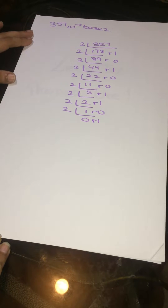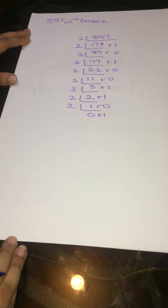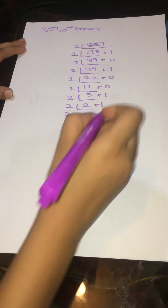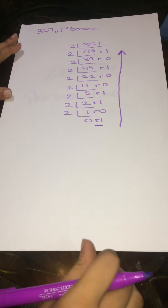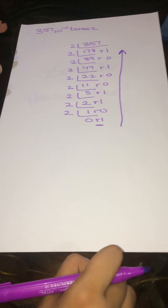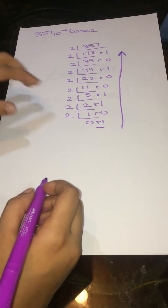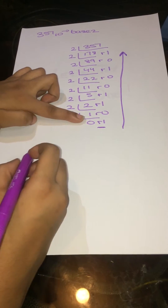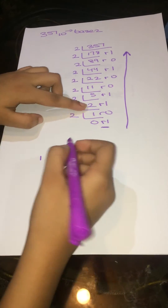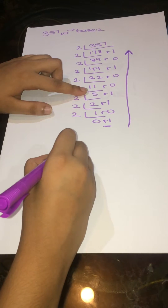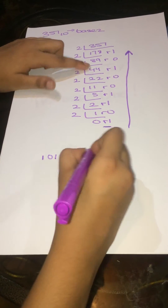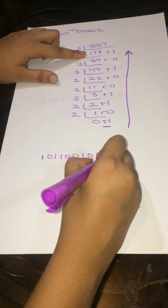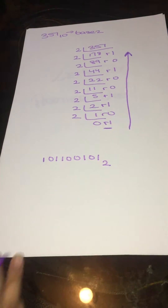The third step is starting from the last remainder going up to write all the numbers until the last one. So you start from your last remainder going up. And the fourth step is to write the number in the form of base 2. So it goes 0, 1, 1, 0, 0, 0, 1, 0, 1 in the form of base 2. And that is your final answer.